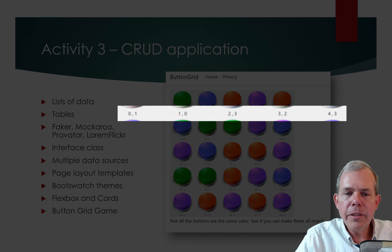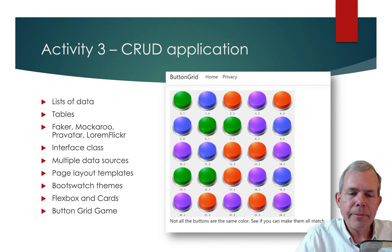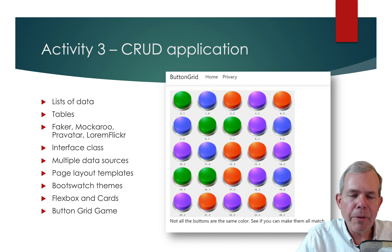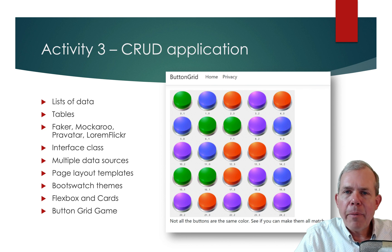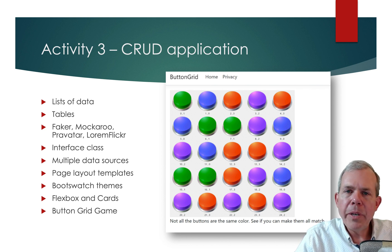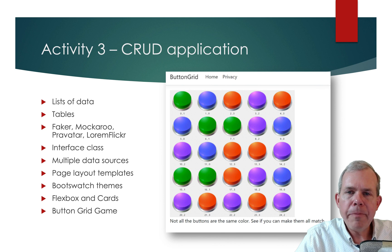Each button also has a second number that corresponds to a color. Blue is color zero, green is one, two is purple, and three is red — arbitrary numbers assigned to colors. When you click one, we increment the color number. When we get to color three, the next click cycles back to color zero. There are four choices for the color.